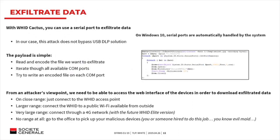Another option with the WiFi Injector is that it has a serial port. On Windows 10, serial ports are automatically linked to a COM port, so you can talk to the COM port in PowerShell. You write a simple payload, read the file you want to exfiltrate in Base64, then iterate through all available COM ports and write the Base64 chunk to all ports — the correct one will work and you can exfiltrate data. You still need to retrieve the weaponized device to get the file back, unless you have the Wi-Fi option, which lets you exfiltrate over Wi-Fi.